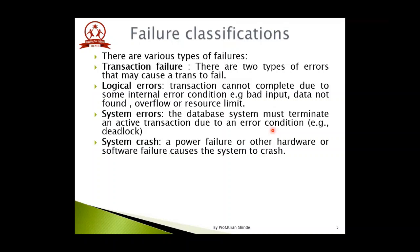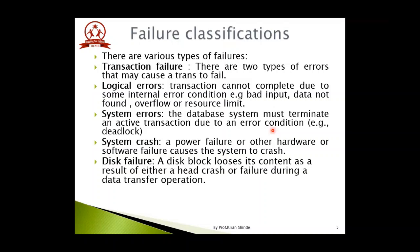Another type of failure is system crash. It can happen due to power failure, hardware failure, or software failure. Disk failure is again a typical type of failure which happens very rarely, but it is still categorized. A disk block loses its contents as a result of either a head crash — where the read-write head of the disk gets crashed — or failure during a data transfer operation. These are the types of failures which happen in database systems.